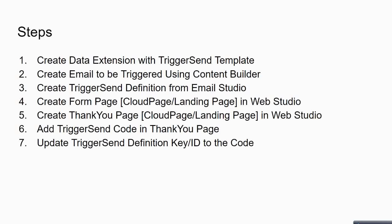First, you have to create a Data Extension using the Trigger Send template — this step is very important. A simple Data Extension won't work. Then you have to create your email, create your Trigger Send definition, create the form, create a Thank You landing page, and in your Thank You page you will have your AMPscript. Finally, you have to add the Trigger Send code and make sure the Trigger Send definition key is updated in the code as well.